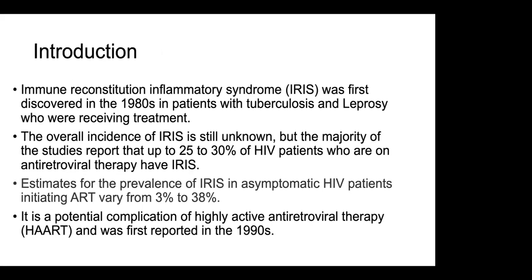Introduction. The immune reconstitution inflammatory syndrome, IRIS, was first discovered in the 1980s in patients with tuberculosis and leprosy who were receiving treatments. The doctors noticed that patients started on anti-tuberculosis treatment were getting better, and then suddenly their conditions changed and became worse, with inflammatory symptoms. The overall incidence of IRIS is still unknown, but the majority of studies report that 25 to 30 percent of HIV patients on antiretroviral therapy will have IRIS.